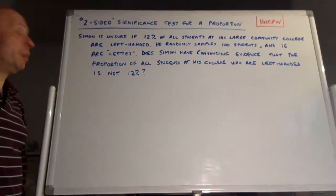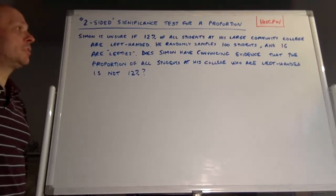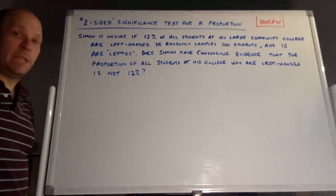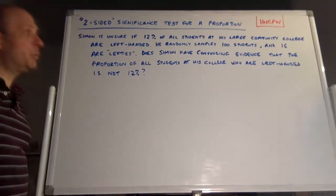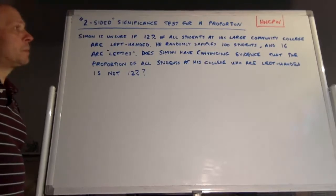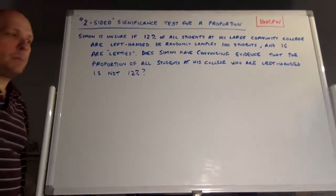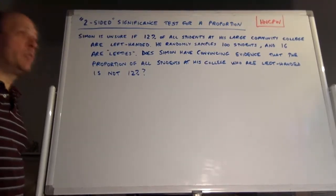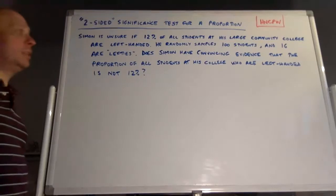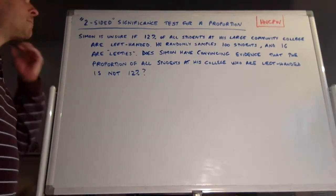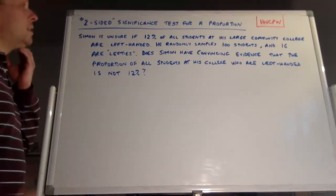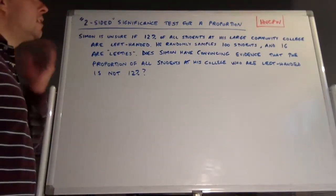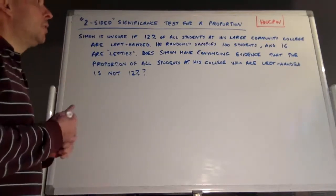He smartly randomly samples 100 students so that it's a random and representative sample, but he gets 16 out of 100. So maybe when he gets that, he's starting to doubt whether it really is 12% at his college. Let's carry out the significance test and see where it all turns out.